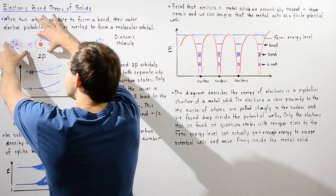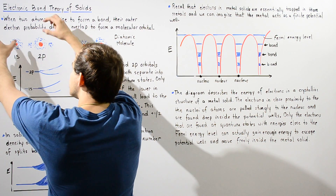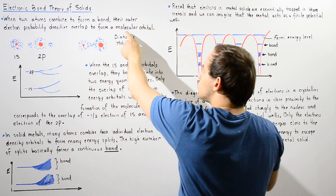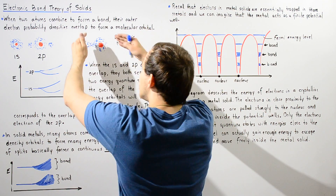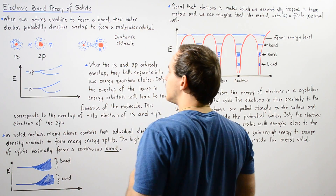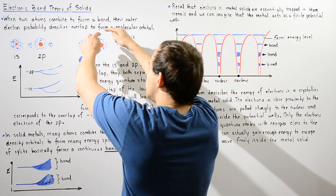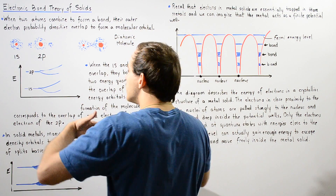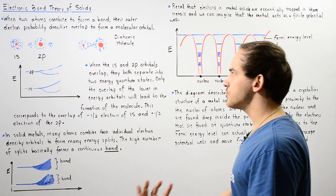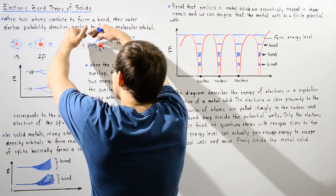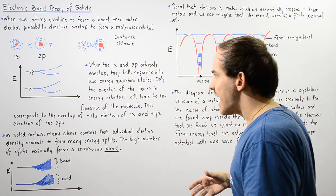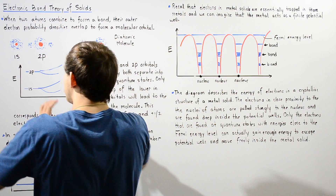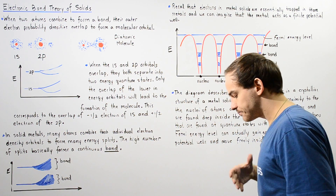Basically, the two atomic orbitals of our two atoms overlap to form a new electron cloud called the molecular orbital. Because there is more space inside this molecular orbital for electrons to move around, Heisenberg's uncertainty principle tells us that more space means lower energy. So the formation of this molecule creates a system that is lower in energy and therefore more stable than the two individual atoms.